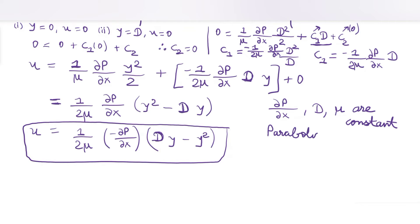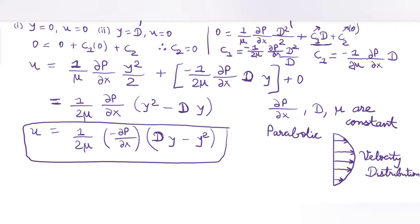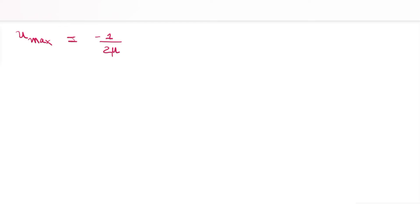This parabolic profile is the same as obtained in the first case, that is for the circular pipe. Now let's find the ratio of maximum velocity to average velocity. First we need the maximum velocity. We already know the maximum velocity occurs at the midpoint between the plates, so we use y = D/2, u = U_max.